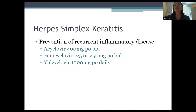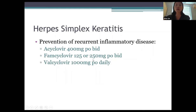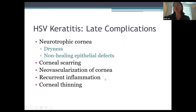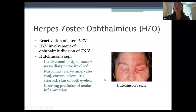For HSV disease, treatment dose of acyclovir is 400mg five times a day; prophylactic dose is lower at 400mg twice a day. Alternatives include Valtrex once daily or Famvir. Late complications of HSV include neurotrophic cornea — a cornea without proper sensation leading to dryness and non-healing epithelial defects — as well as corneal scarring, neovascularization, recurrent inflammation, and corneal thinning.